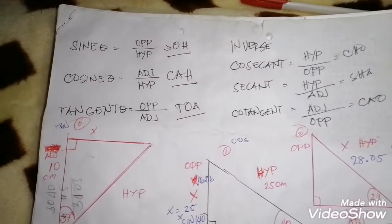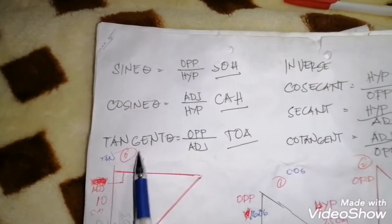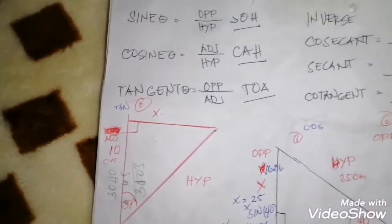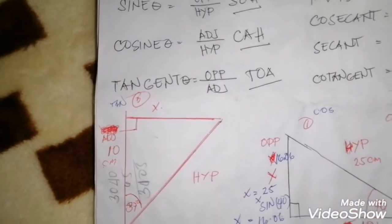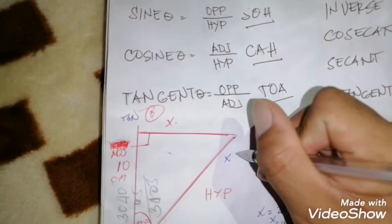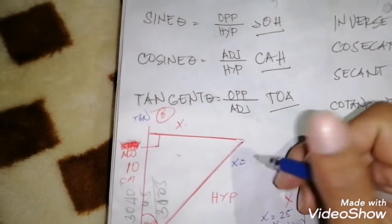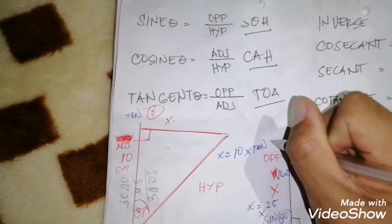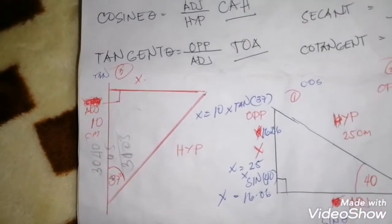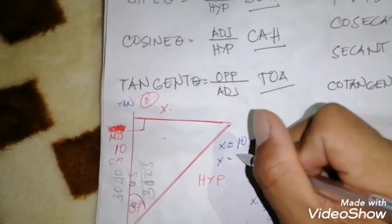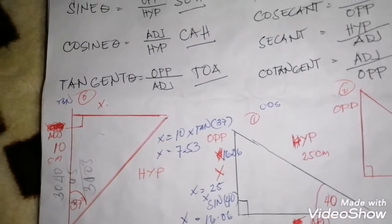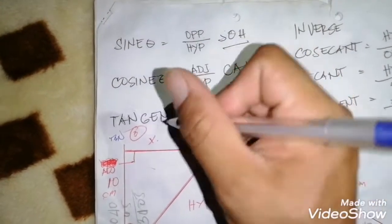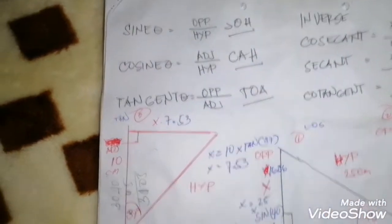For the third equation, we use tangent. Find x — we need to find x. x equals 10 multiplied by tangent 37 degrees. The answer is 7.53. That is the answer for x — the opposite side is 7.53.